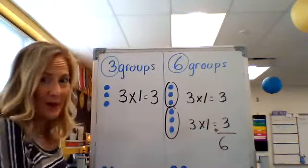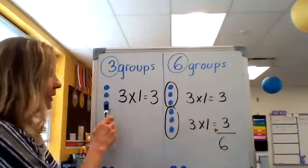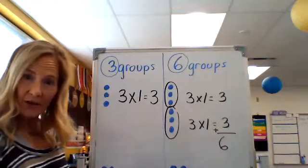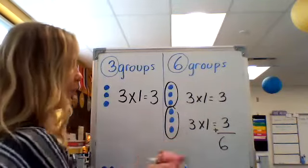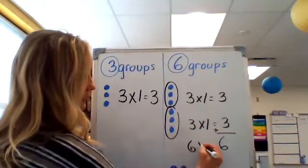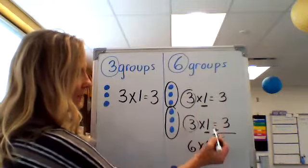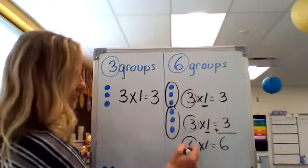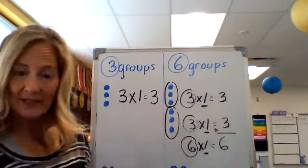And you probably know three times one is three and six times one is six. But you want to be able to use this kind of strategy to break it apart into two easier problems to find out what six groups of one would be. That tells me how many groups I have. This factor tells me how many are in a group. So I have six groups with one in each group and my final answer or product would be six.